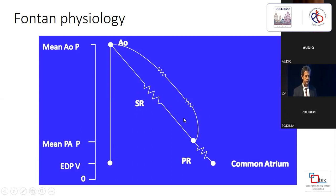You also have the splanchnic resistances and the liver. So the anatomical portal circulation is de facto a portal within a portal circulation. That's important to understand.